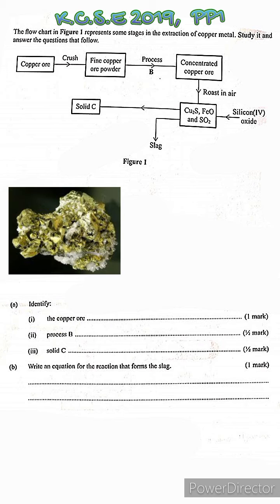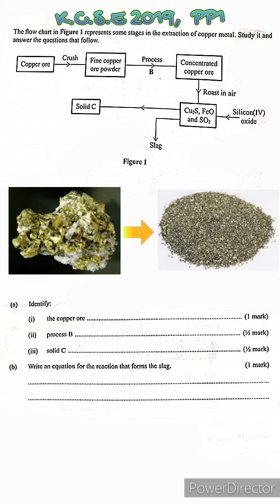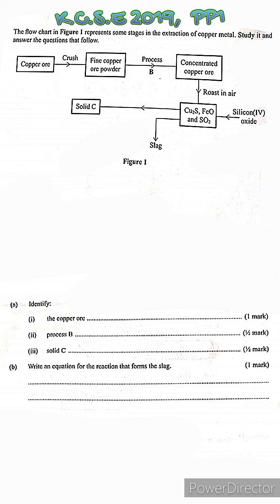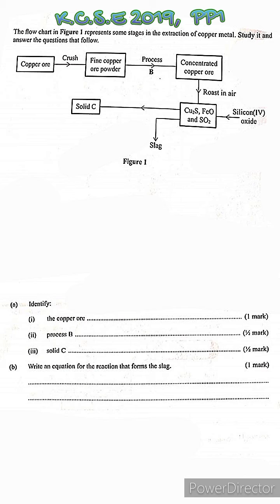The copper pyrites are then crushed — ground into a fine powder. Then process B happens. To know what process B entails, we look at its outcome: the ore is concentrated. In extraction of metals, concentration of the ore means a process whereby impurities are removed. In the case of copper, this is done through froth flotation.